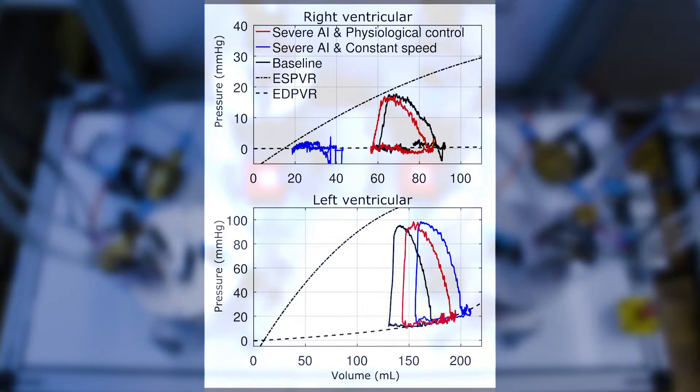Under severe aortic insufficiency, the right and left ventricular pressure volume relations are shown. Physiological control approaches, shown in red, allowed to efficiently balance the fluid between the systemic and the pulmonary circulation. During constant speed operation, depicted in blue, suction occurred in the right ventricle and the left ventricular volume increased.